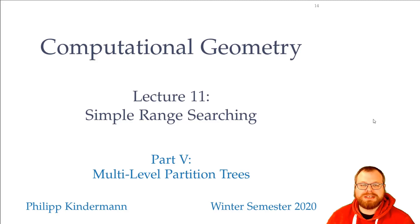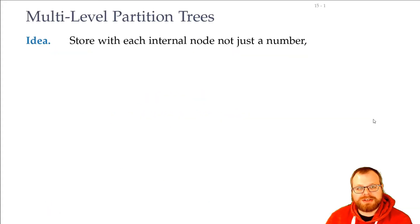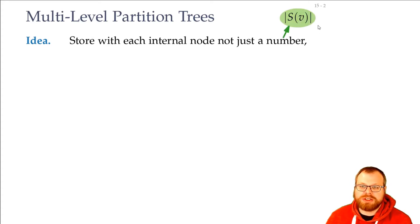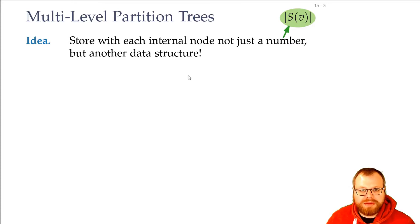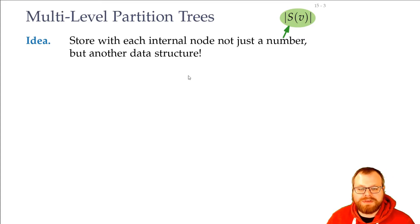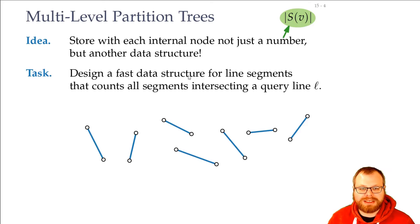In this part, we want to have a look at an extension, which are multilevel partition trees. You already know from the range trees that we can augment our trees. So we don't want to just store a number at each internal node, which was the size or the number of points in it, but another data structure. And with that, we can even process other types of data. We don't only have to look at points, but we can have a look at larger things like segments.